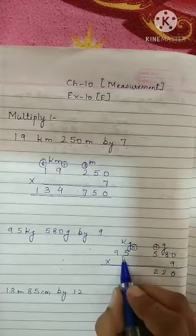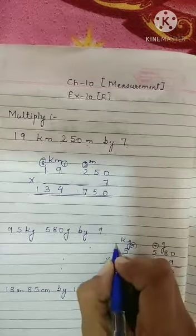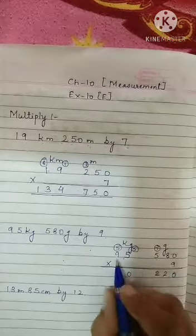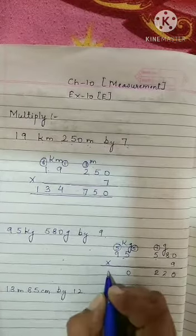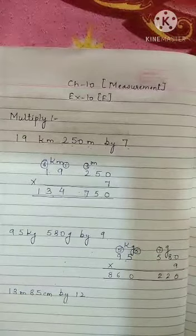9 fives are 45, 45 plus 5 is 50, write 0, 5 carrying over. 9 nines are 81, 81 plus 5 is 86. Clear everyone?